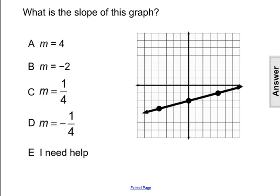What is the slope of this graph? The slope of a graph is referred to as the rise over run from each point on the line.